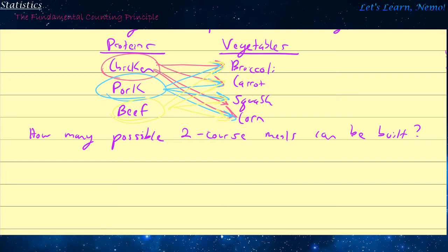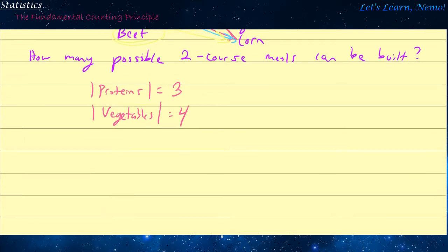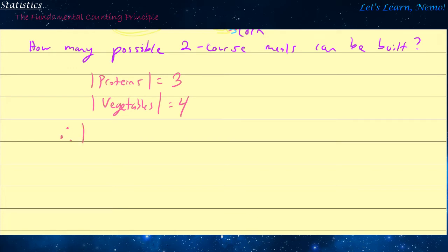By the Fundamental Counting Principle we can get this directly. The number of proteins is equal to three, and the number of vegetables is equal to four. So the number of two-course meals is equal to three times four, or twelve — just as we calculated before.